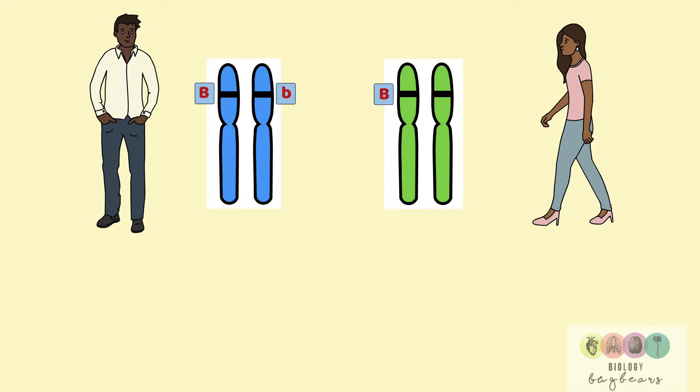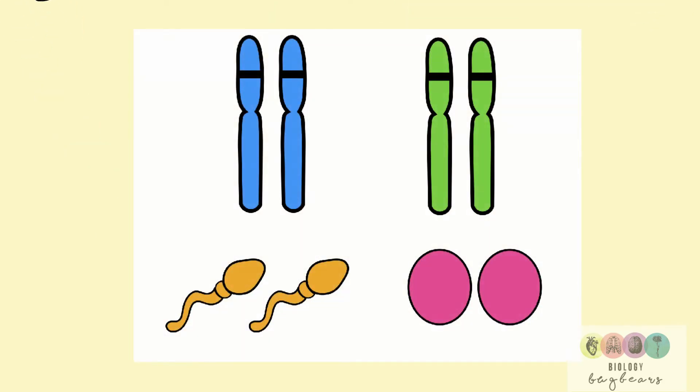So the male has the alleles big B, little b and the female two big Bs. So at gamete formation the male can only give either a big B or a little b into each of the sperm, and the female can only in this case give two big Bs, one into each egg.